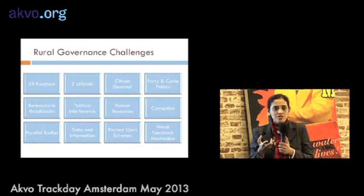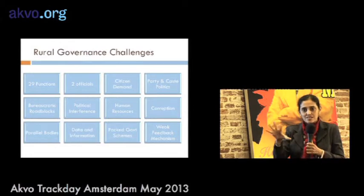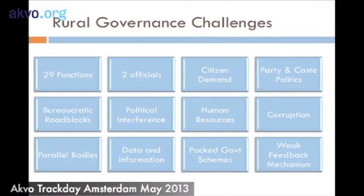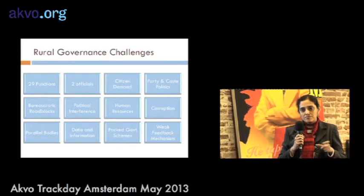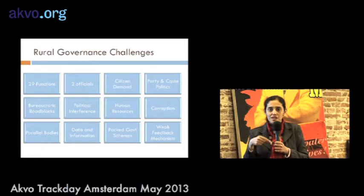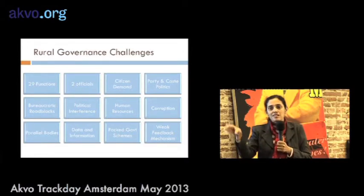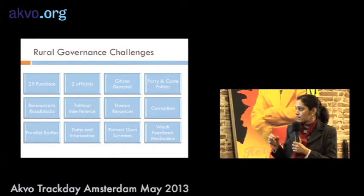There are many HR-related problems: not enough human resources, very weak citizen demand, insufficient training and skills. Another set involves systemic challenges — corruption, political interference, bureaucratic roadblocks that prevent services from being delivered. The last set are structural problems: lack of data and information, weak feedback mechanisms to the local government, and parallel bodies set up because people don't have faith that the local government can deliver. All of these serve to weaken the local government.